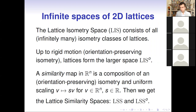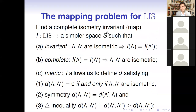So usual isometries, rigid motion, similarity preserving orientation, and general similarity without preserving orientation — each of these four equivalence relations defines its own space of equivalence classes. The simplest one is the lattice isometry space. It consists of infinitely many isometric classes of lattices, because every small perturbation of a lattice basis produces a slightly different, non-isometric lattice. We would like to construct a complete isometric invariant that maps the lattice isometry space to a much simpler space — in this case, triples of real numbers.